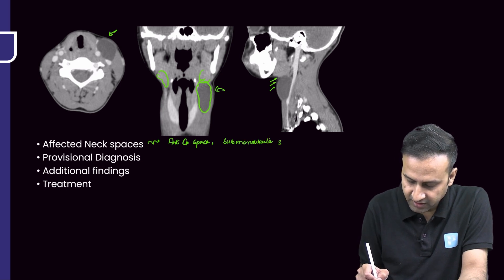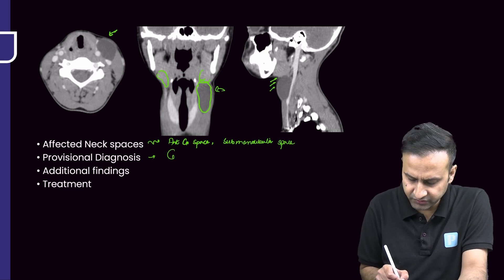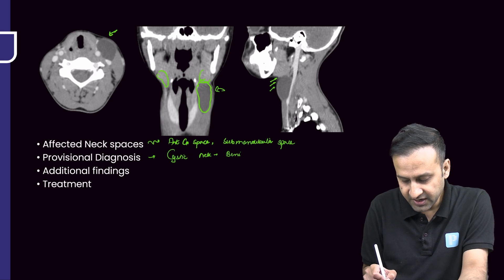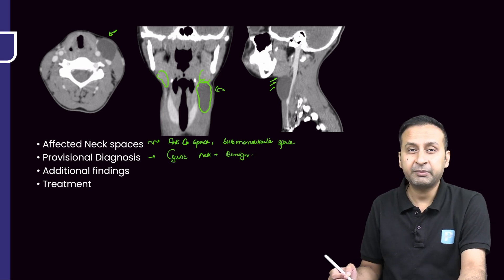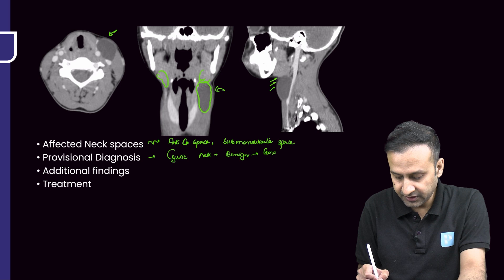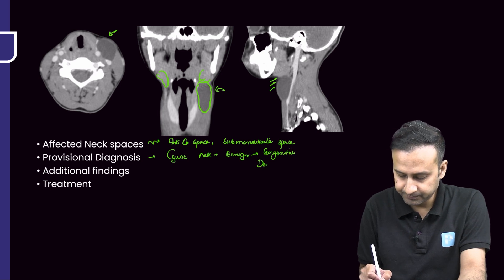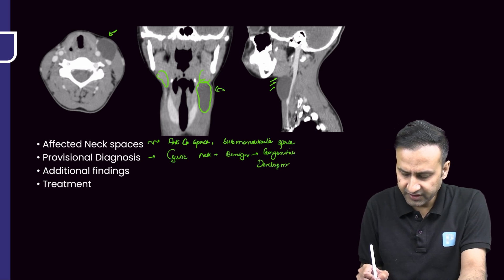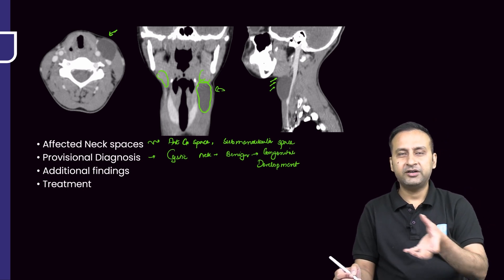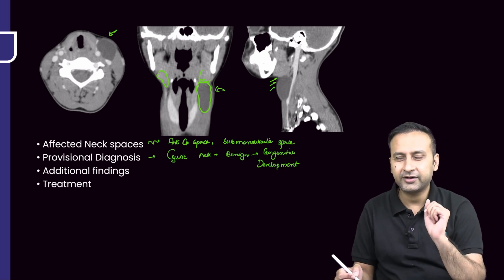The provisional diagnosis is a cystic lesion of the neck, likely a benign cystic lesion. Since this is a pediatric patient, there is a high possibility of it being either congenital or developmental. Do we see any complex features? No. On CT there were none — no perifocal inflammation, no perifocal infiltration.